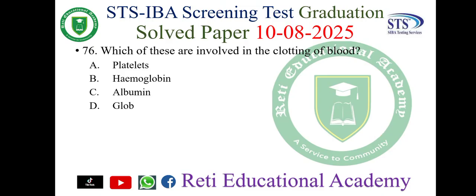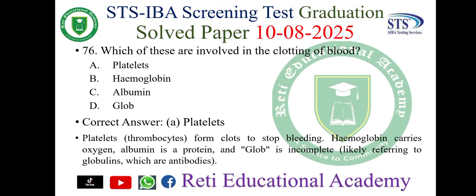Question number 76: Which of the following are involved in clotting of blood? A) Platelets, B) Hemoglobin, C) Albumin, D) Globulins. The correct answer is A) Platelets. Platelets (thrombocytes) form clots to stop bleeding. Hemoglobin carries oxygen, albumin is a protein, and globulins are antibodies.